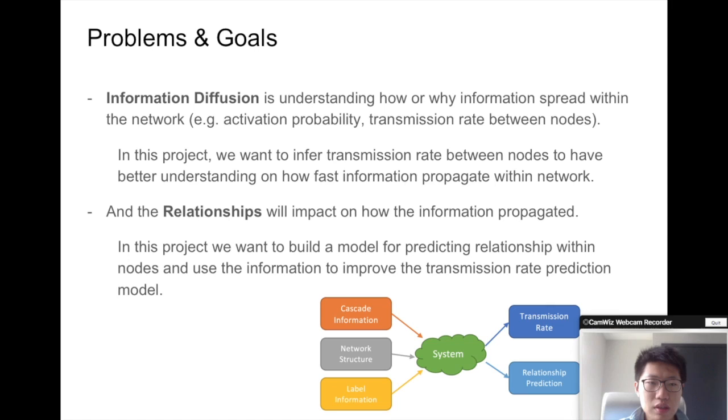We also want to discover the relationships because we think the relationships will impact how the information propagates. So we grab information like cascade information, network structure, and label information to predict the relationship and calculate the transmission rates.